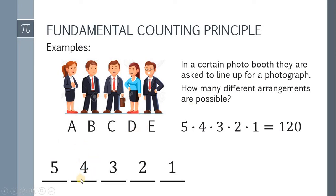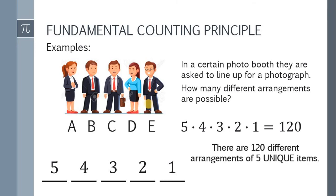You might ask: why does the number of options decrease? Because once a person is placed in the first position, they can't be used again in the second position — there's only one of each person. Each time someone is placed, the remaining options decrease by one. So when you take one person, the options for the next position go down. In general, there are 120 arrangements of 5 unique items — whether they are cards, marbles, fruits, or people.